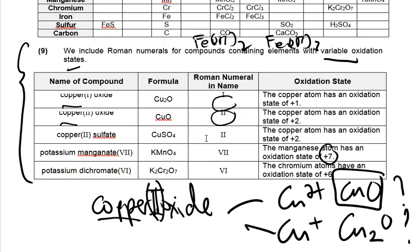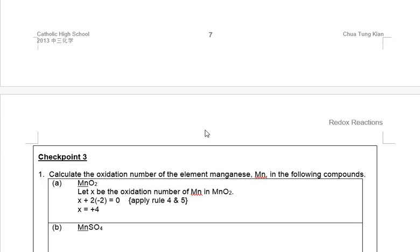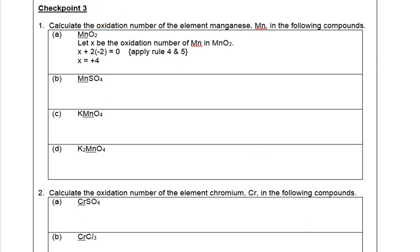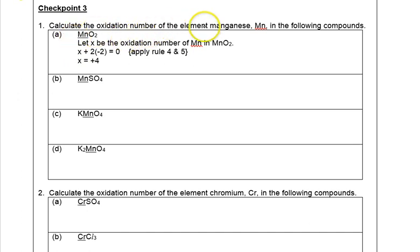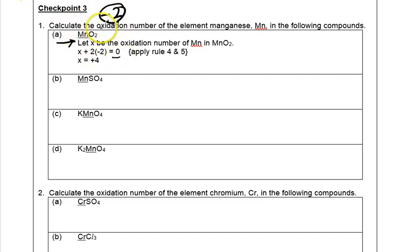Let's do Checkpoint 3. In MnO₂, what is the oxidation state of Mn? We let X be the oxidation number of Mn in MnO₂. Oxygen is minus 2, and there are 2 oxygen atoms. So X plus 2 times minus 2 equals 0, since MnO₂ has no overall charge. Solving, we get X equals plus 4.